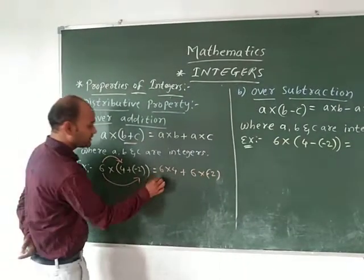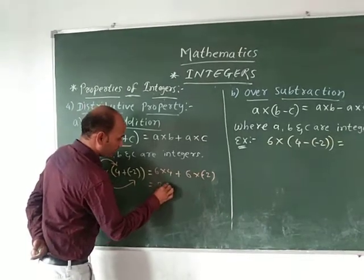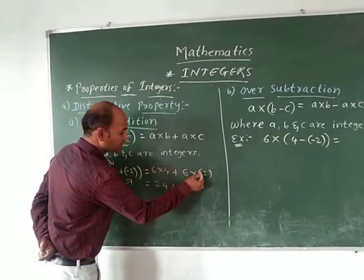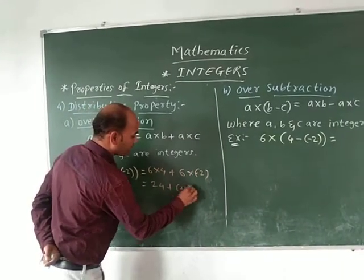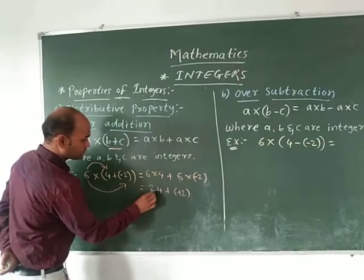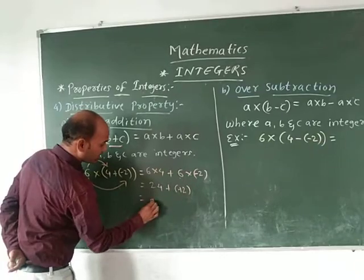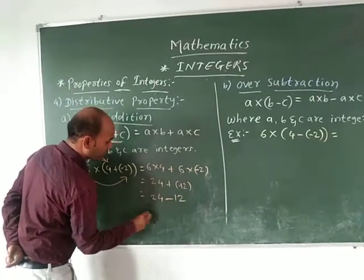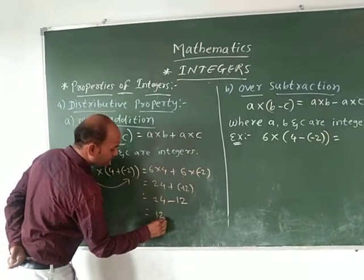So here, 6 fours are 24 plus 6 times minus 2 is minus 12. 6 times minus 2 is minus 12. So 24 plus minus equals minus. Here 24 minus 12 becomes 12.